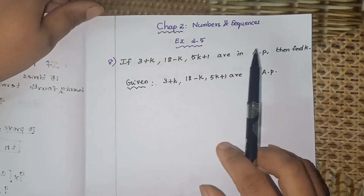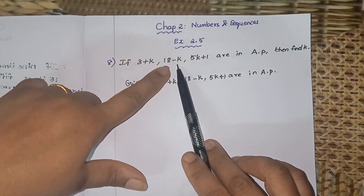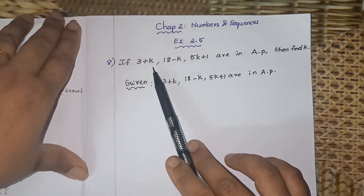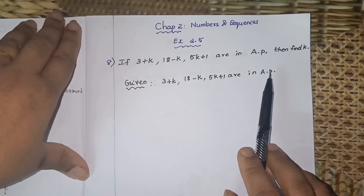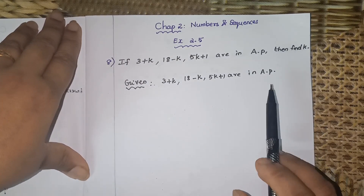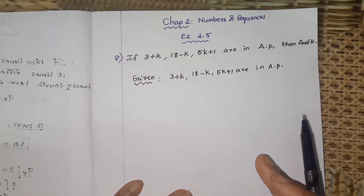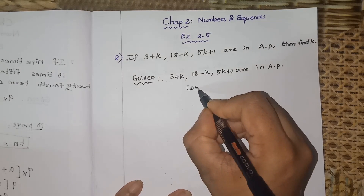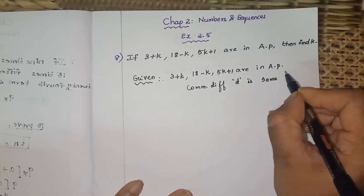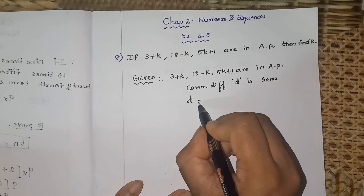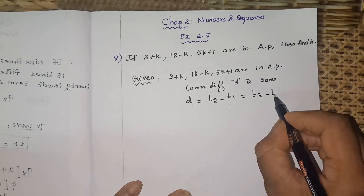These are the given data. They are saying these three terms — (3+k) is the first term, (18-k) is the next term, and (5k+1) is the next term. These three terms are in AP. If they are in AP, what is the condition? The important concept is: the common difference, denoted by d, is the same. The formula to find d is: t2 minus t1, or t3 minus t2.